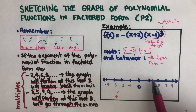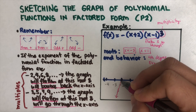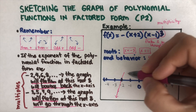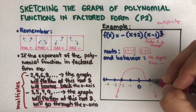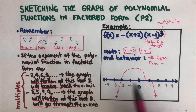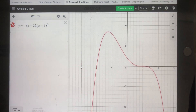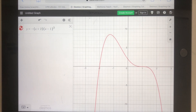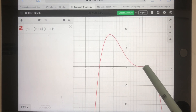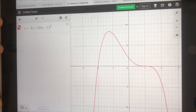Now we sketch the graph. At negative two there's no multiplicity, so the graph just goes straight through. At positive one, there is a multiplicity of three, so it flattens and goes through. I graphed this equation on Desmos and this is how it looks — it goes through negative two but flattens at positive one because of the multiplicity there.